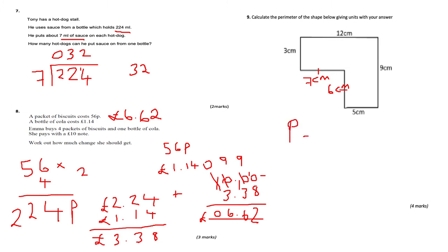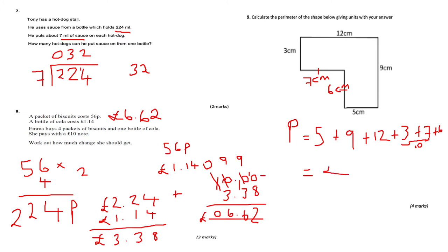Now calculate the perimeter: P = 5 + 9 + 12 + 3 + 7 + 6. Working step by step: 5 + 9 = 14; 14 + 12 = 26; 26 + 10 = 36; then 36 + 6 = 42. Wait — that gives 42, but adding all six values: the perimeter of this compound shape is 42 centimetres.